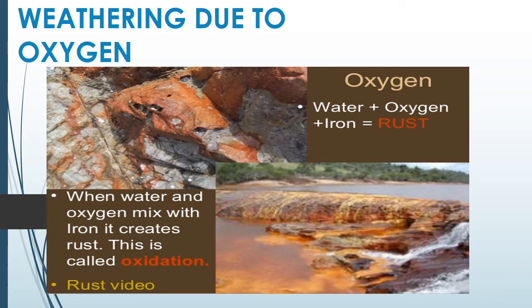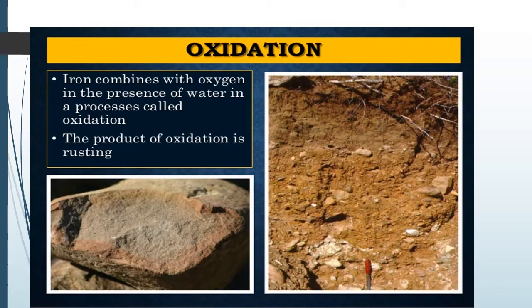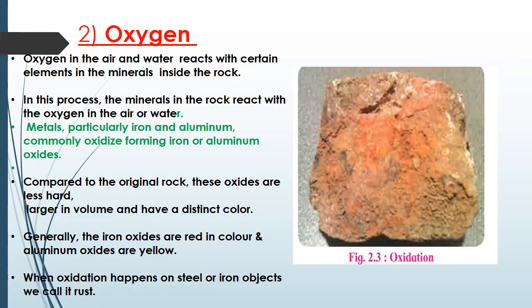When water mixes with iron, a different colored material is formed — that material is called rust. The process of converting iron into rust is called oxidation. Iron combines with oxygen in the presence of water in a process called oxidation, and the product of that oxidation process is called rusting.